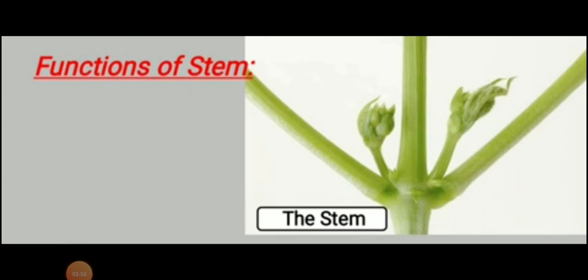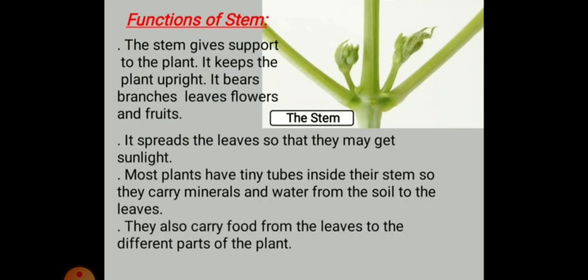Now let's discuss an important topic you will see on the screen — it is the stem. In this part we will discuss different functions of the stem. The stem gives support to the plant and keeps the plant upright. It bears branches, leaves, flowers, and fruit. It separates the leaves so that they may get sunlight. Most plants have tiny tubes inside their stem which carry minerals and water from the soil to the leaves. They also carry food from the leaves to different parts of the plant.